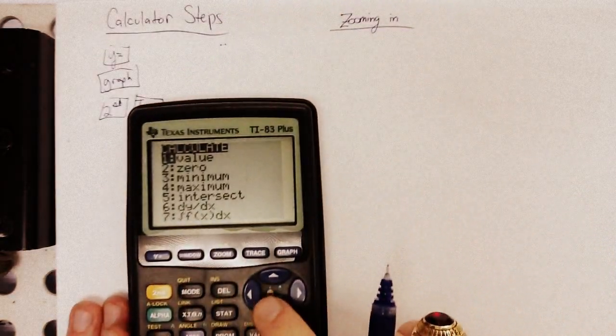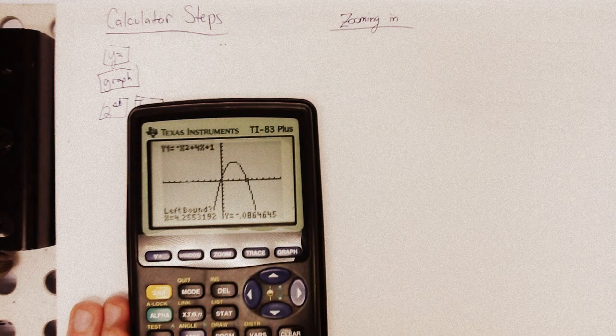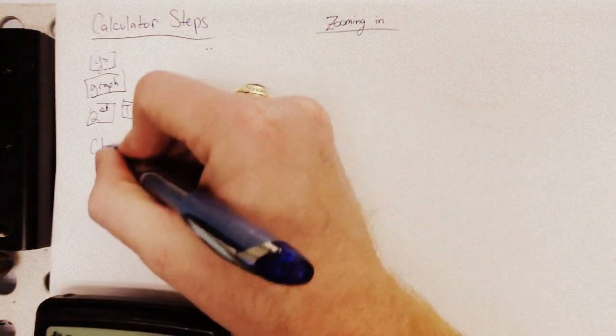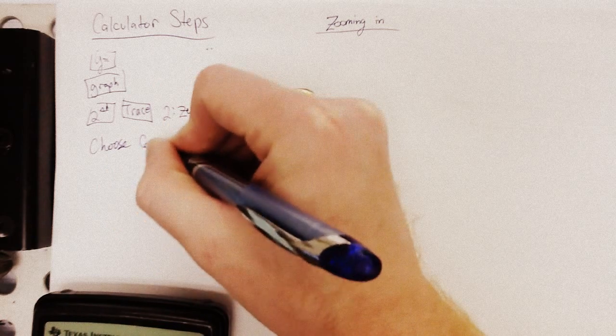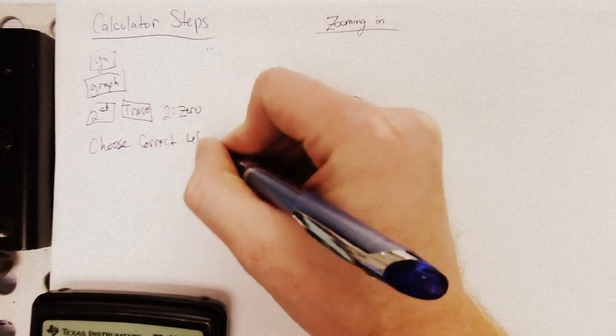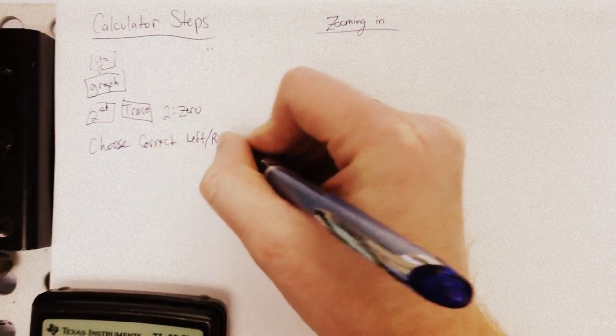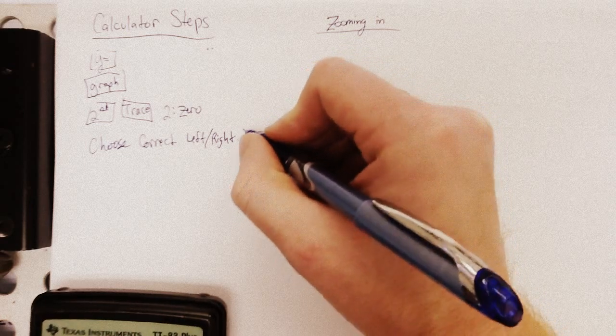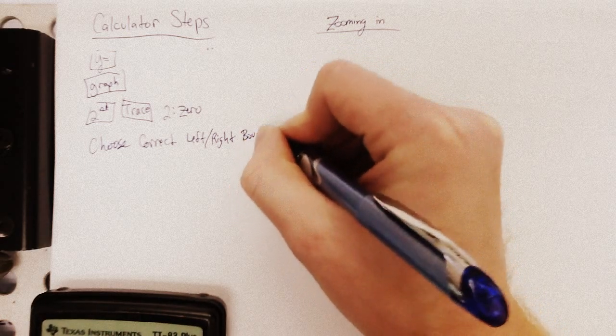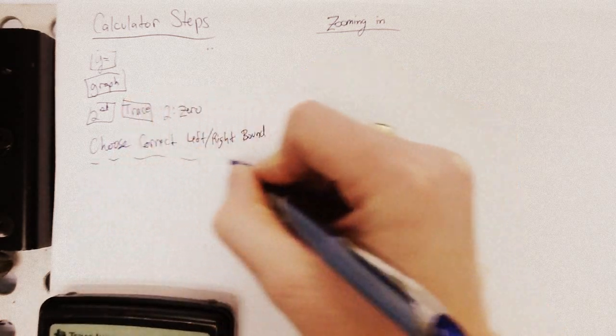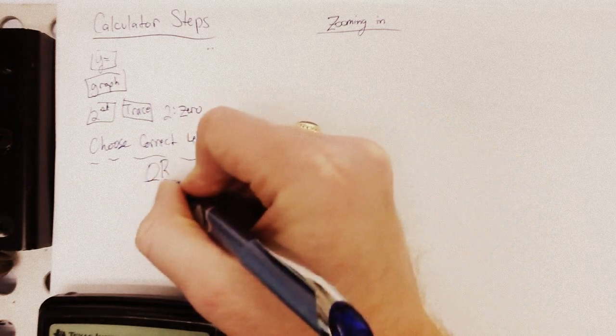Okay. And then, I'm just going to say, choose the correct left and right bound. Well, that, that can run into some difficulty. So, let me give you another option. So, we'll put a big or right here. Or, here's another option you have.